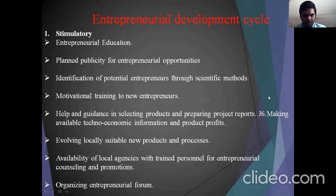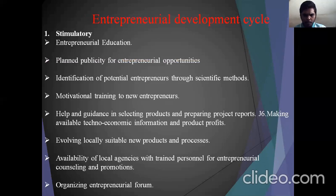Entrepreneurial development life cycle. First is stimulatory. Stimulatory includes entrepreneurial education, planned publicity for entrepreneurial opportunities, identification of potential entrepreneurs through scientific methods, motivational training for new entrepreneurs, guidance in selecting products and preparing project reports, making available technologies, information and product profiles, informally theoretically sustaining new products and processes, and availability of a local agency with trained personnel for entrepreneurial consulting and promotions, and organizing entrepreneurial forums.